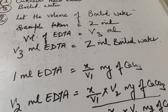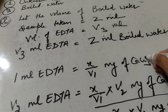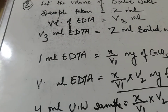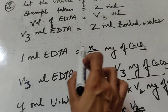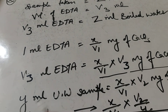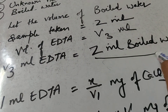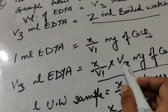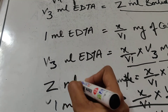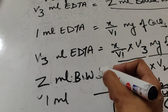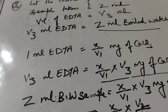From standardization, 1 ml EDTA neutralizes X/V1 mg of CaCO₃. So V3 ml EDTA will neutralize (X/V1) × V3 mg of CaCO₃. Since V3 ml EDTA neutralizes Z ml boiled water, and V3 ml EDTA neutralizes (X × V3)/V1 mg CaCO₃, it means Z ml boiled water contains (X/V1) × V3 mg of CaCO₃.